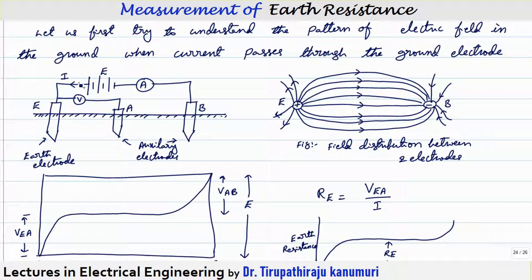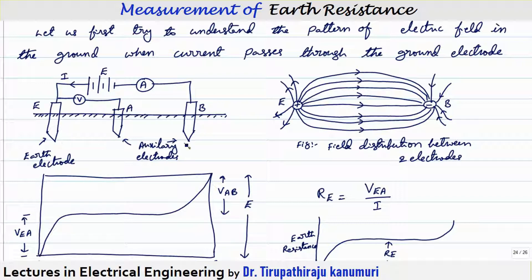Let us take an example. I am connecting a battery source E to the earth electrode E, and the second side of the battery is connected to another electrode B which is placed a little bit far from electrode E. The current I will pass through the battery, come to electrode E, pass through the electrode into the ground, and return back from electrode B to the battery.